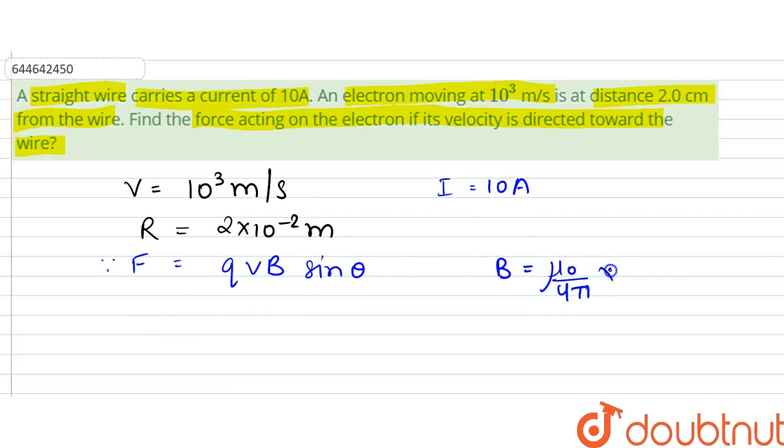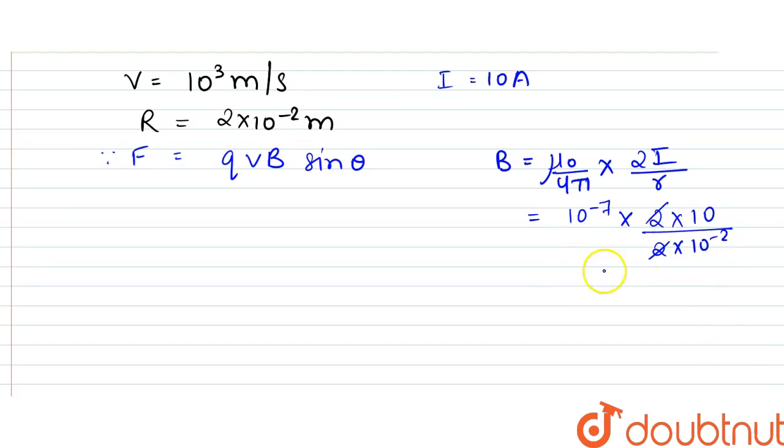So B would be equal to μ₀/(4π) × (2I/r). That would be equal to, since 4π×10⁻⁷/(4π), so it is 10⁻⁷ × 2 × 10/r, that is 2×10⁻². So this and this would get cancelled, so it would be 10 to the power minus...